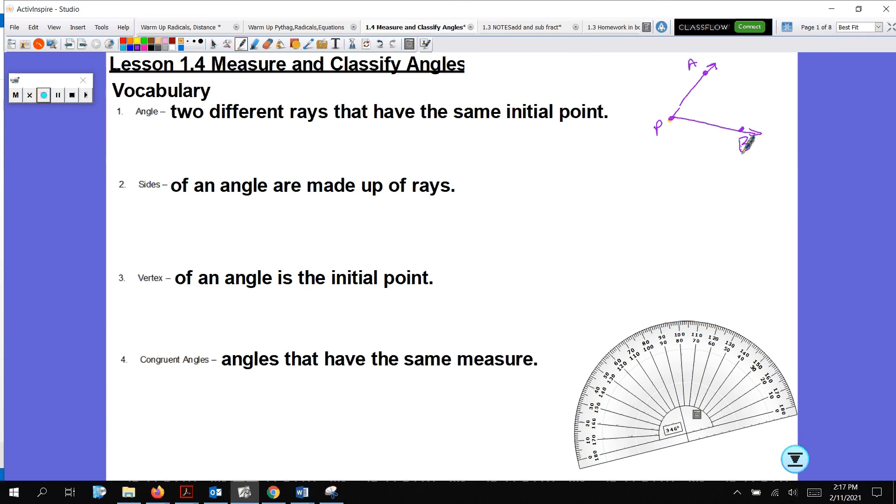How we name an angle, there's three different ways we do that. First, we write this little symbol that looks like that. We use the three letters in the order that they are: angle APT, or angle TPA, where the initial point is in the center. You can name it like that, or you can just say angle P. Make sure you have that angle marked down, it's really important.